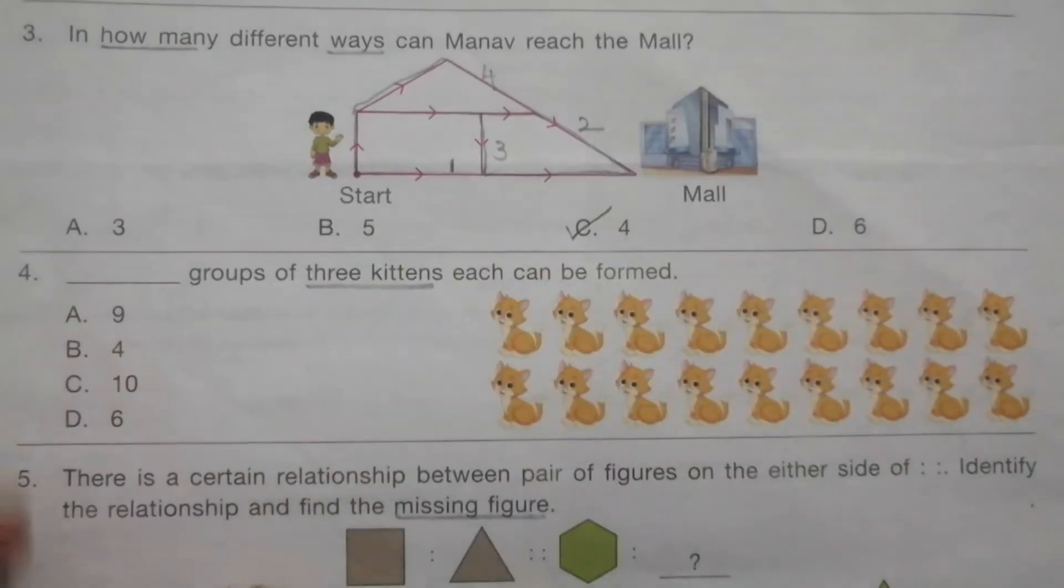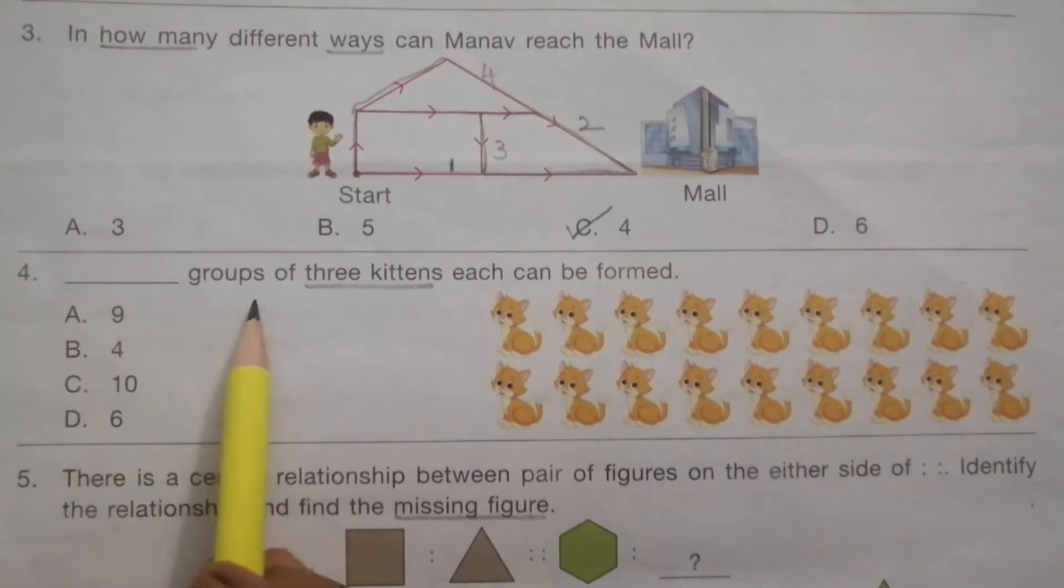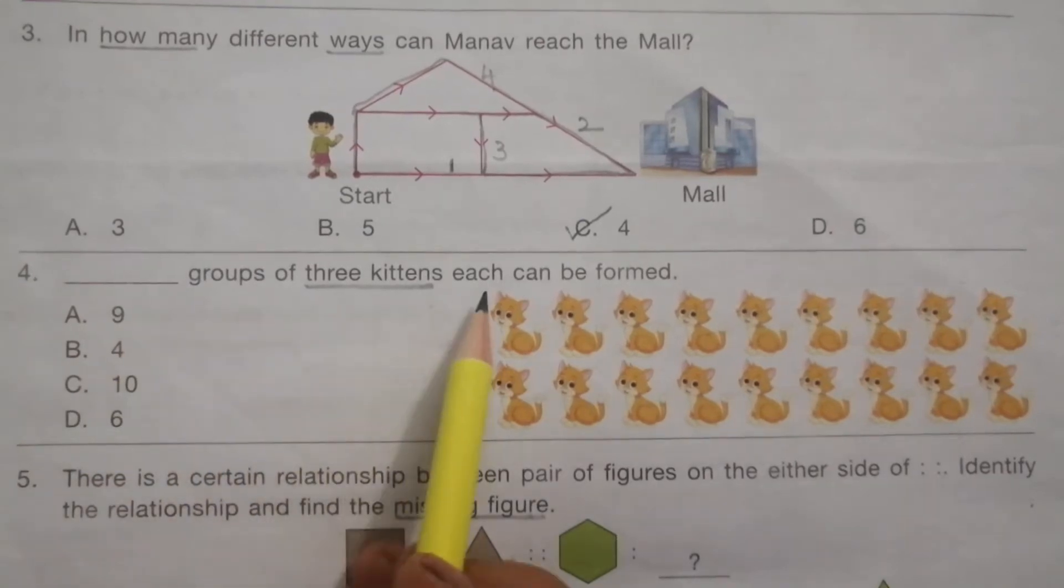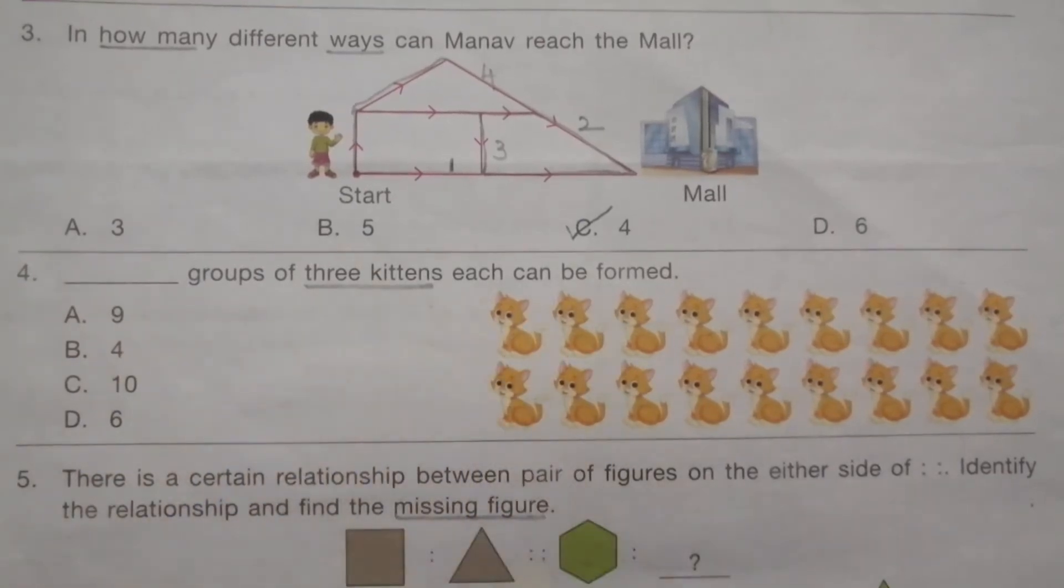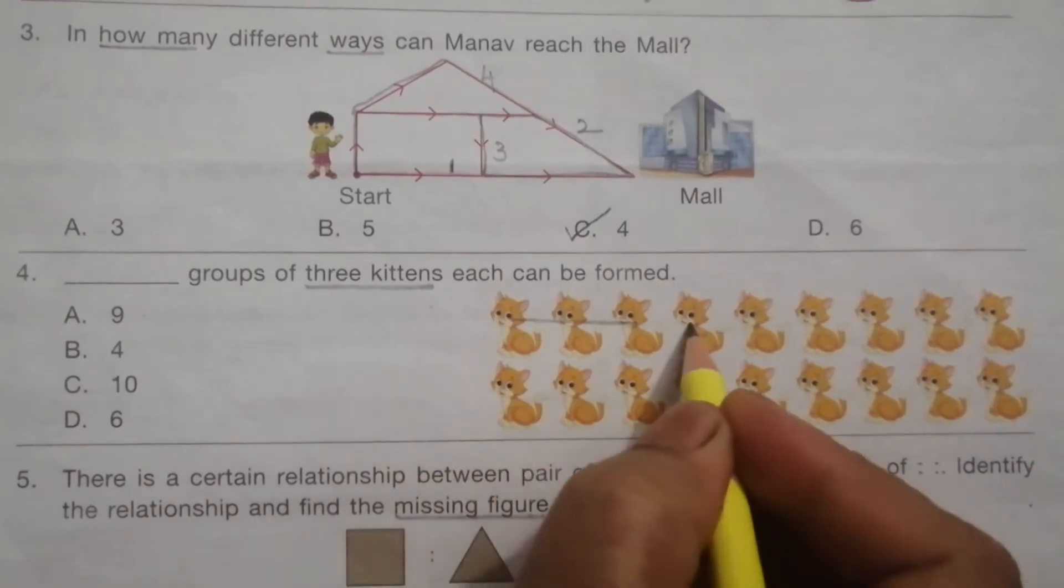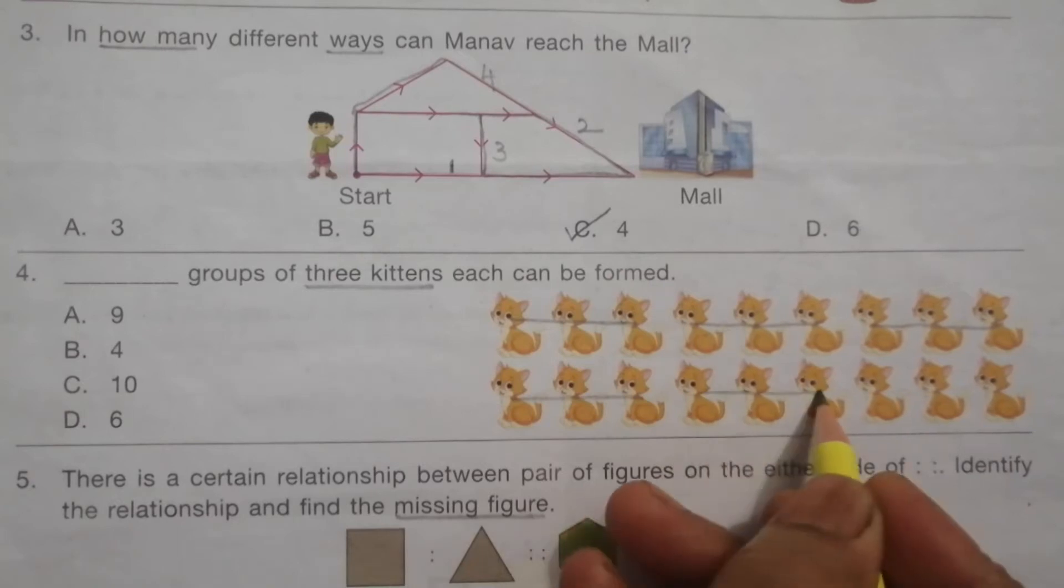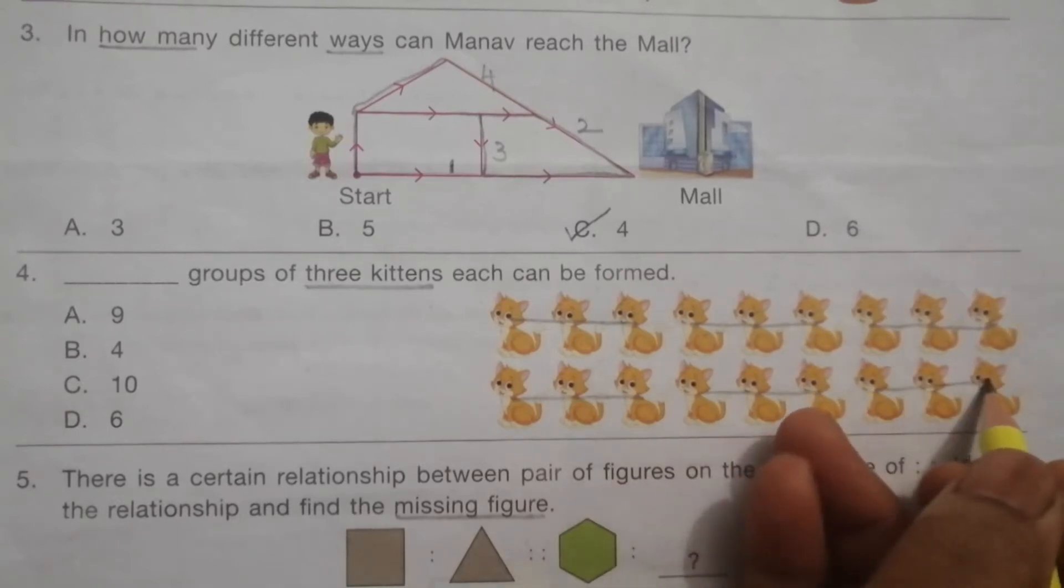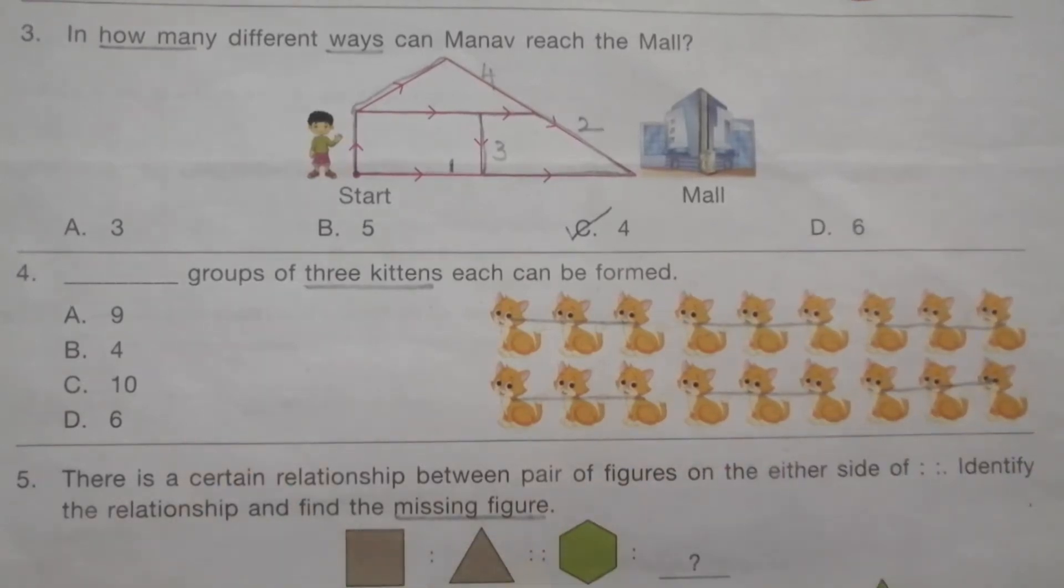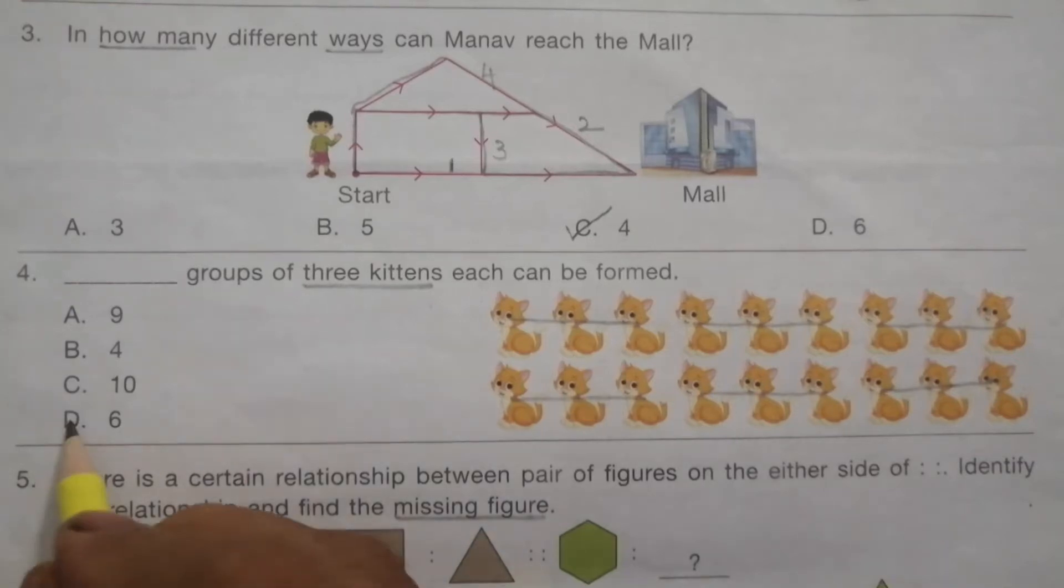Problem 4: How many groups of 3 kittens each can be formed? Counting: 1, 2, 3, 4, 5, 6. So how many groups? 6 groups. Answer is D, 6.